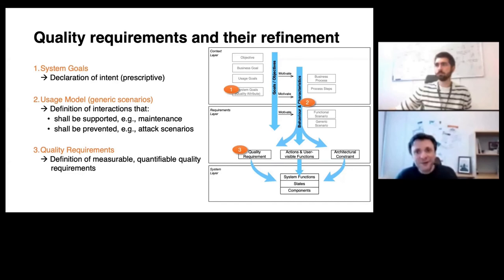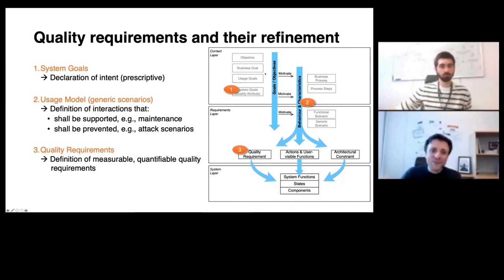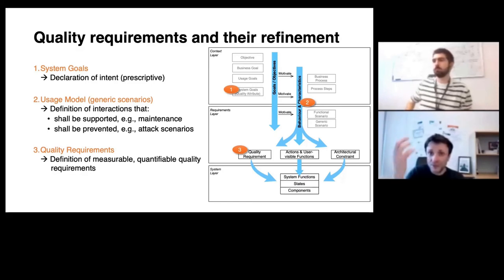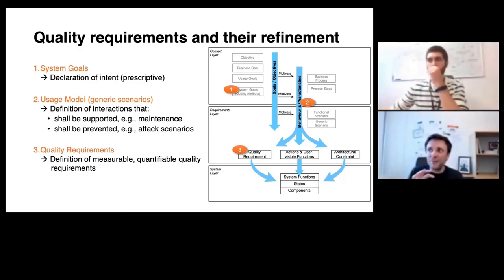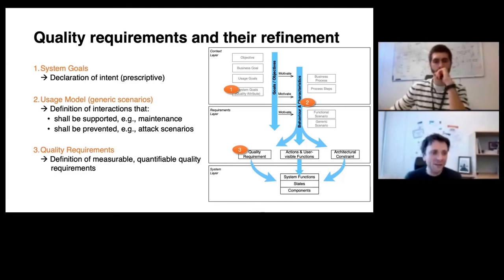Generic scenarios can express scenarios that should be supported — for example, what someone in software maintenance intends to do in terms of modification. They can also take a more negative perspective: attack scenarios that should be prevented, when I am not able to refine security goals to a measurable way. I can express them as scenarios capturing security breaches that should be prevented at all costs. At the third level — the requirements level — refinement does not really distinguish between functionality and quality. For example, refining 'the system should be secure' leads to expressions of interaction scenarios such as how a user should authenticate with the system, which at this point we would consider a functional requirement.